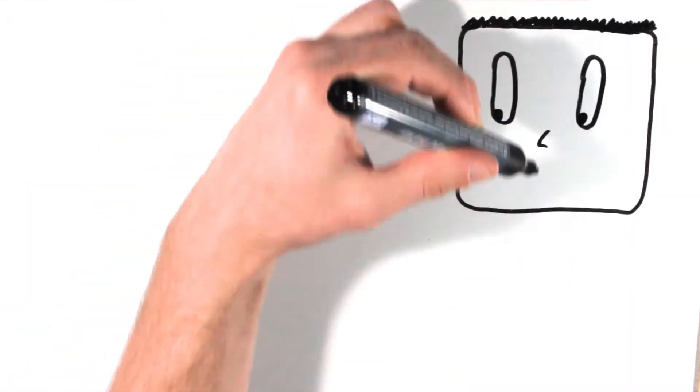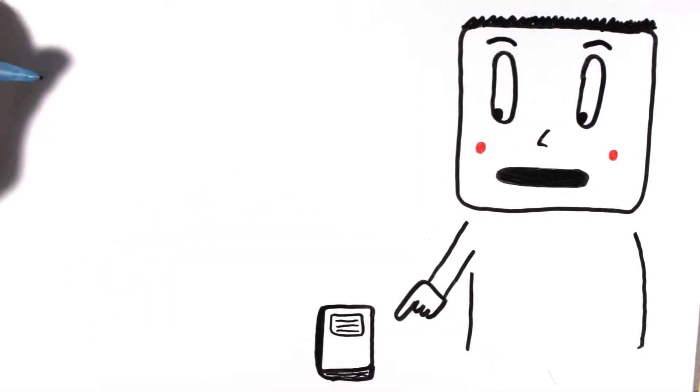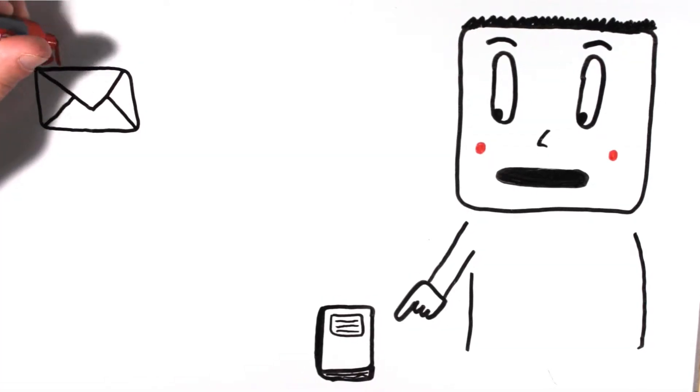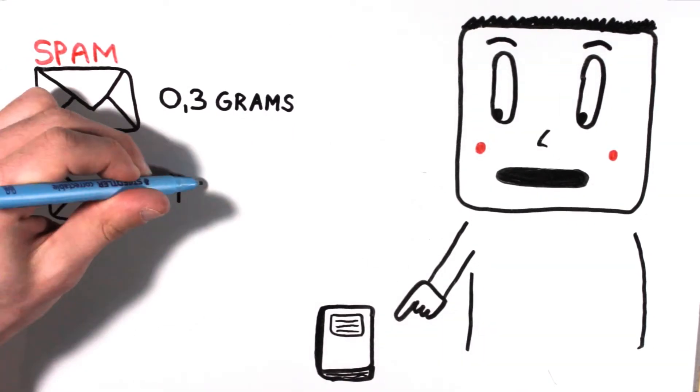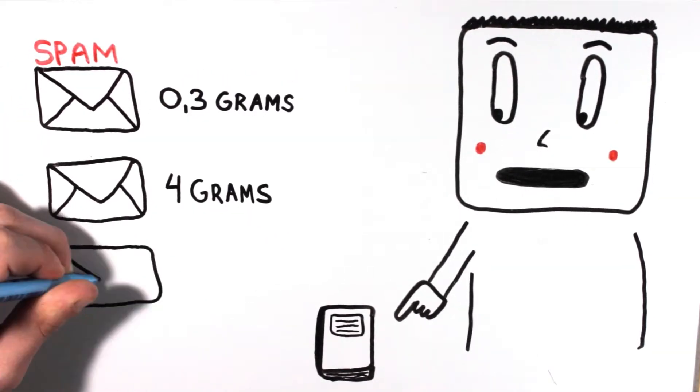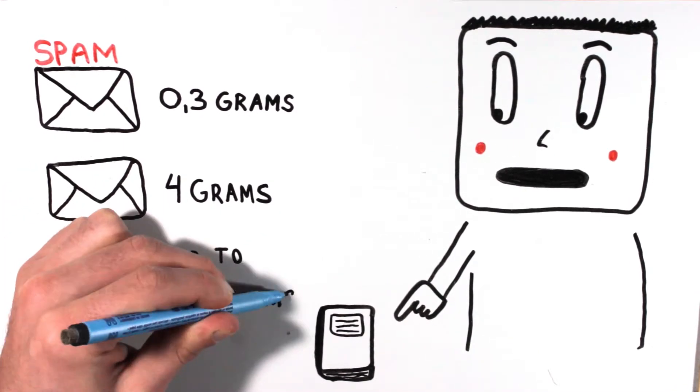According to carbon footprint expert Mike Berners-Lee's book How Bad Are Bananas? The Carbon Footprint of Everything, the average spam mail contains 0.3 grams of carbon dioxide emissions. A normal email contains 4 grams of carbon dioxide emissions and an email with attachments can even reach 50 grams of carbon dioxide emissions.